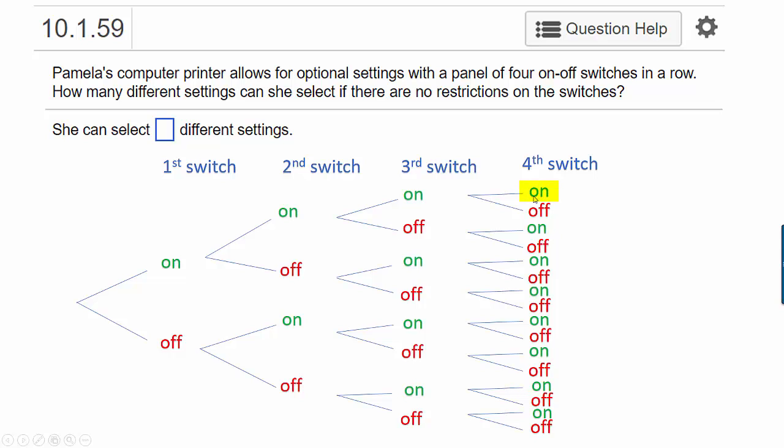Let's look at the first one, on. Reading the tree diagram backwards to the beginning, we see that first for the fourth switch we had an on switch. Then the third switch was on, the second switch was on, and the first switch was on. So this first branch of our tree diagram represents the scenario when all of the switches are on.